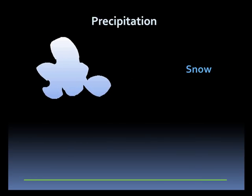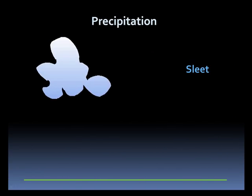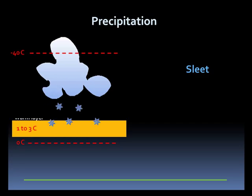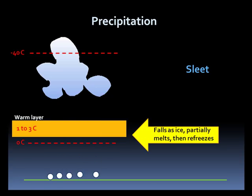For snow, we have a cloud where ice crystals fall out of it and it stays cold enough for them to reach the ground as snow. For sleet, it starts out as snow, but as the ice crystals fall, they move through a warm layer in the 1 to 3 degrees Celsius range. This leads to partial melting of the ice crystals, which then refreeze as they fall through the sub-zero layer below this warm region. This results in sleet.